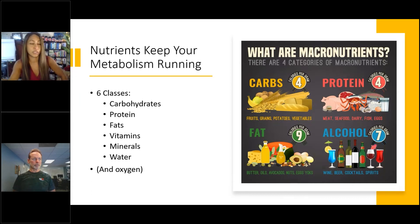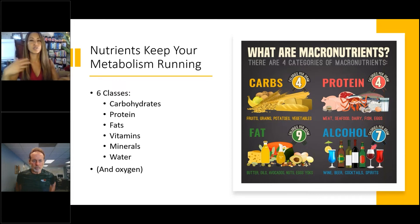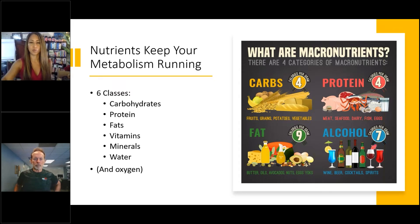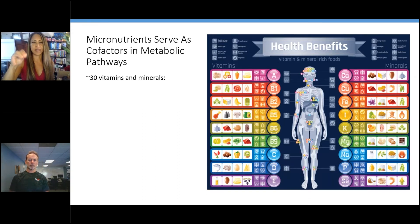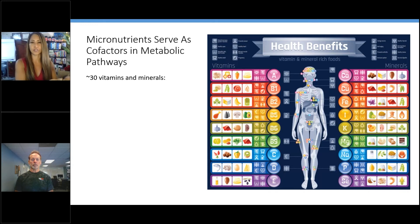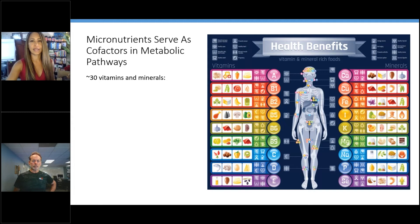We need macronutrients on a daily basis. What happens when you don't get enough? Well, you start to lose weight — your body starts using its own energy stores to keep you going. Then we have micronutrients: vitamins and minerals, which is what we'll be largely talking about today. Vitamins and minerals are called cofactors in metabolic pathways. Enzymes kick-start reactions, those enzymes are proteins, and those proteins require cofactors. There are approximately 30 vitamins and minerals required for human health.